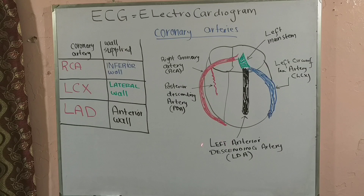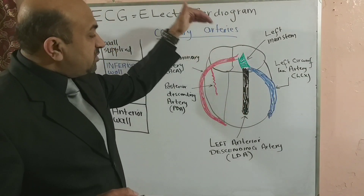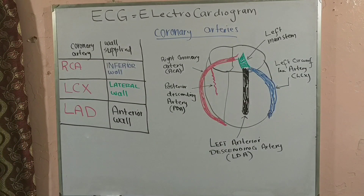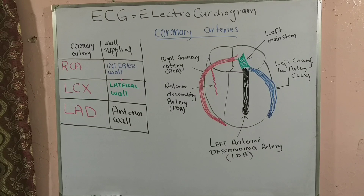The other branch from the left main stem is the left anterior descending artery. It descends on the anterior wall and supplies the major part of the anterior wall of the left ventricle. In summary, the coronary arteries comprise the right coronary artery supplying the inferior wall, the left circumflex artery supplying the lateral wall, and the left anterior descending artery supplying the major portion of the anterior wall.